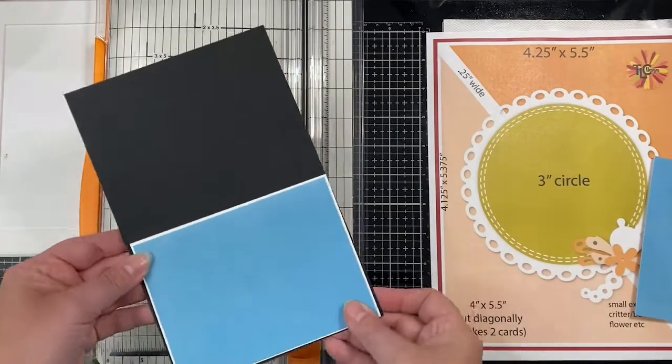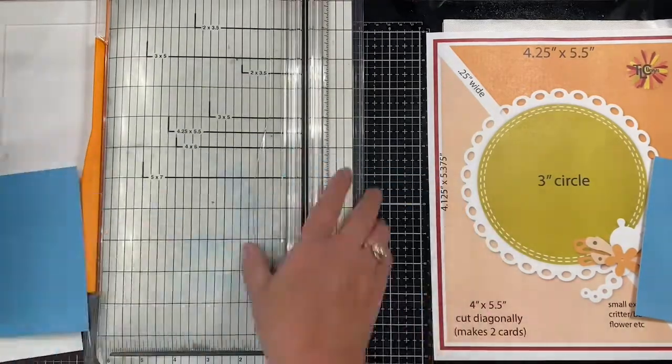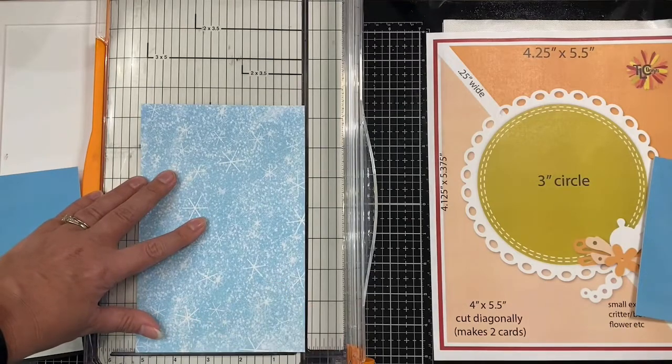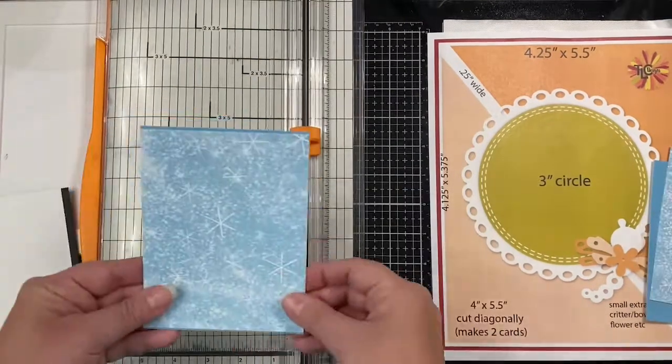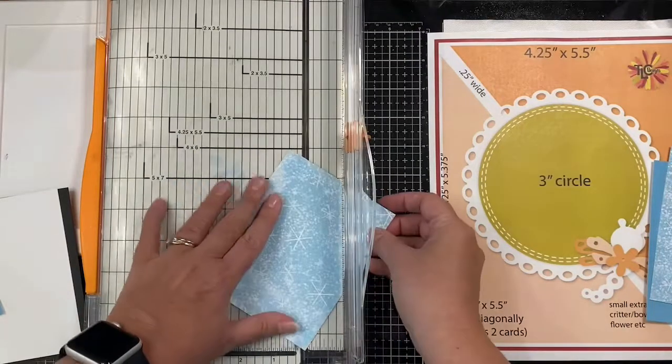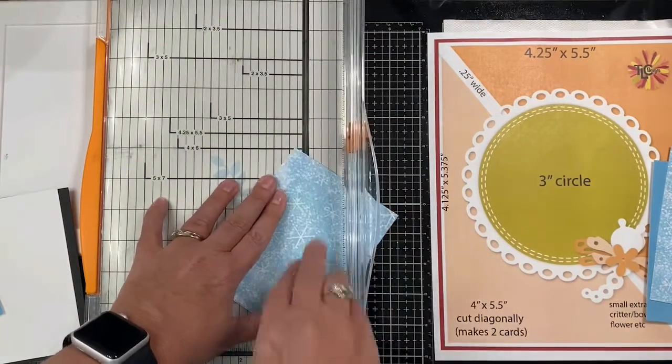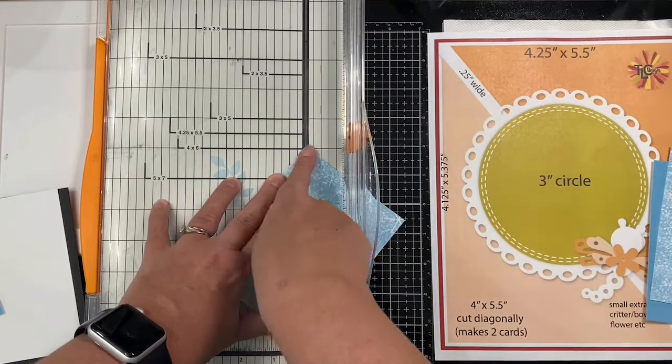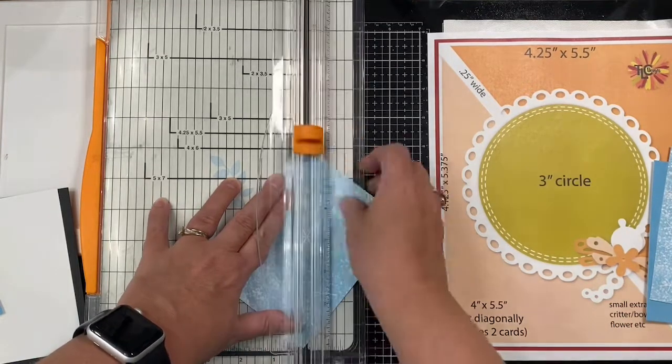For the triangle pieces you'll want to first cut the rectangle piece to be four inches by five and a quarter, and you'll need to do this for both colors. Then you'll want to turn it diagonally and line up the corners on your paper trimmer. Now you want to make sure that the points are along the cut line and you'll do this for both papers.